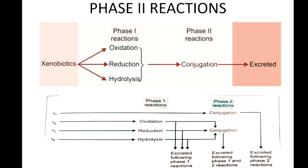In summary, a xenobiotic enters phase 1 where it is modified by adding a functional group through oxidation, reduction, or hydrolysis, producing a primary metabolite or phase 1 metabolite. That phase 1 metabolite enters phase 2 where it undergoes conjugation, converting the toxic compound into a less toxic, more water-soluble compound that can be easily excreted. In some cases the xenobiotic directly enters phase 2, and sometimes the phase 1 metabolite is excreted directly without phase 2 modification.